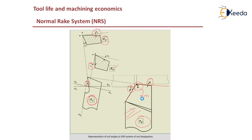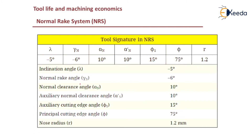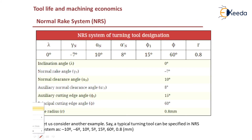For tool designation in NRS, the tool signature format is: inclination angle, normal rake angle, normal clearance angle, auxiliary normal clearance angle, auxiliary cutting edge angle, principal cutting edge angle, and nose radius. For example: -5, -6, 10, 15, 10, 15, 75, 12 — where -5 is inclination angle, -6 is normal rake angle, 10 is normal clearance angle, and so on. Another example shown is 0 (inclination), -7 (normal rake), 10 (clearance). This completes the topic of Normal Rake System.